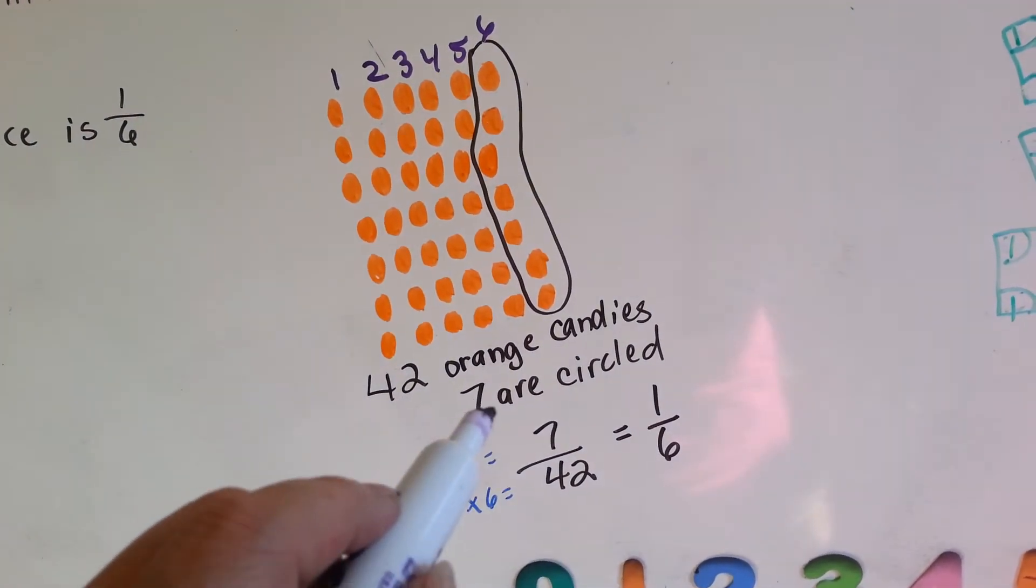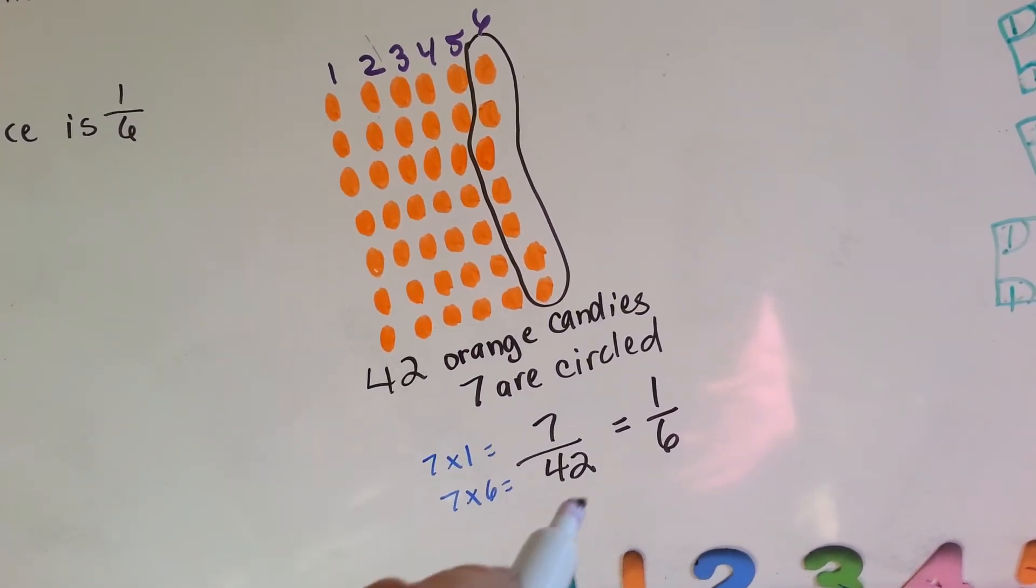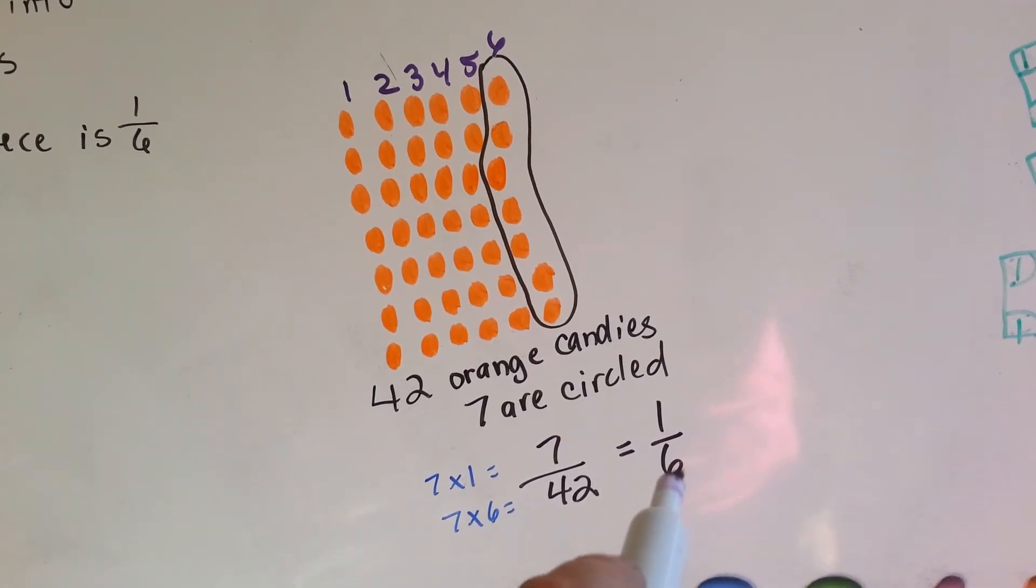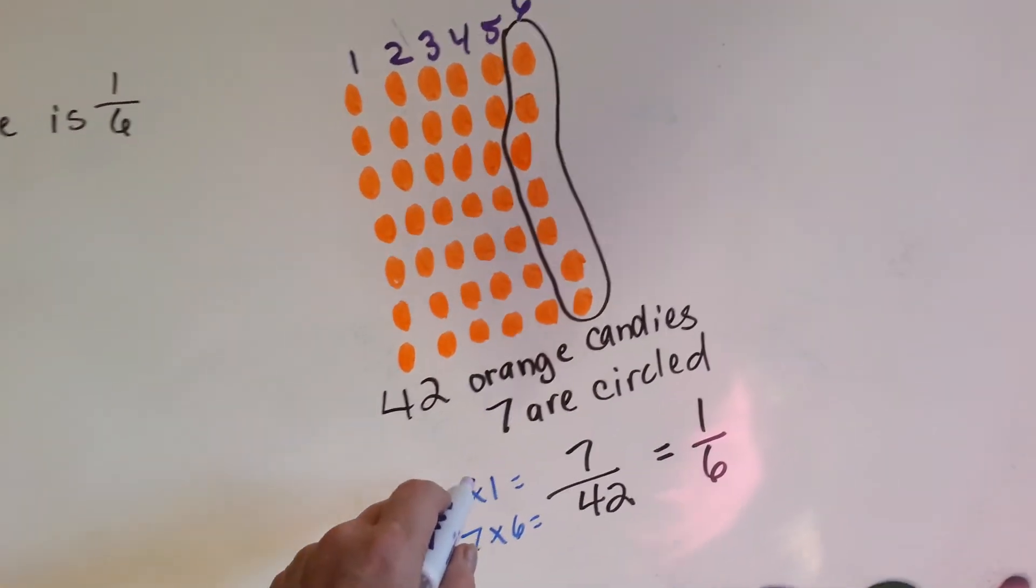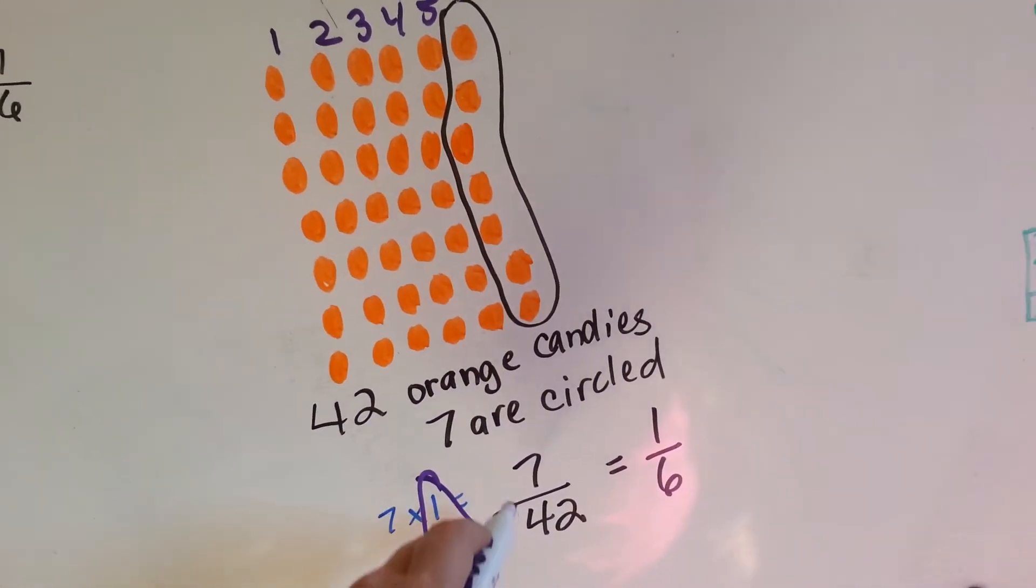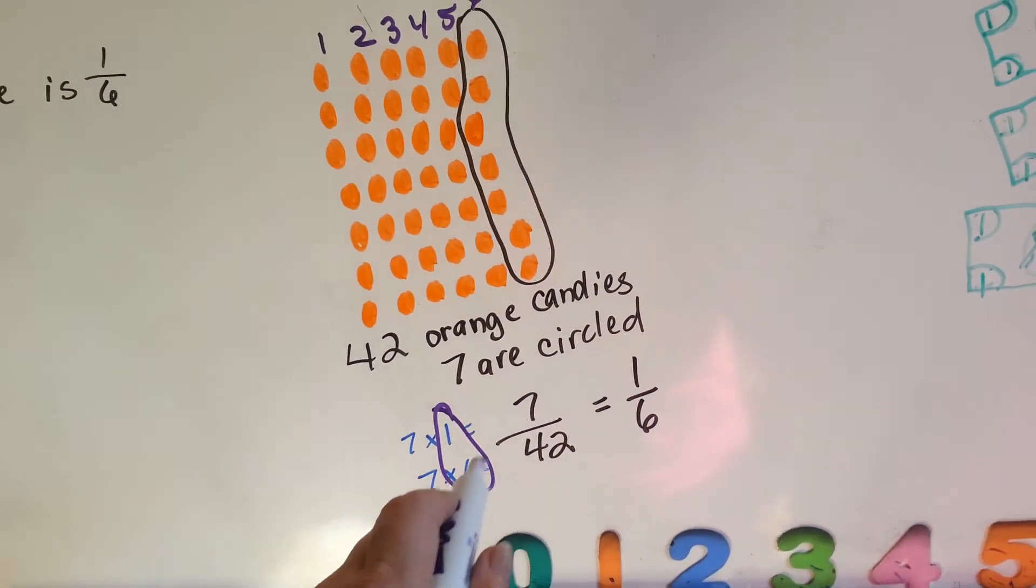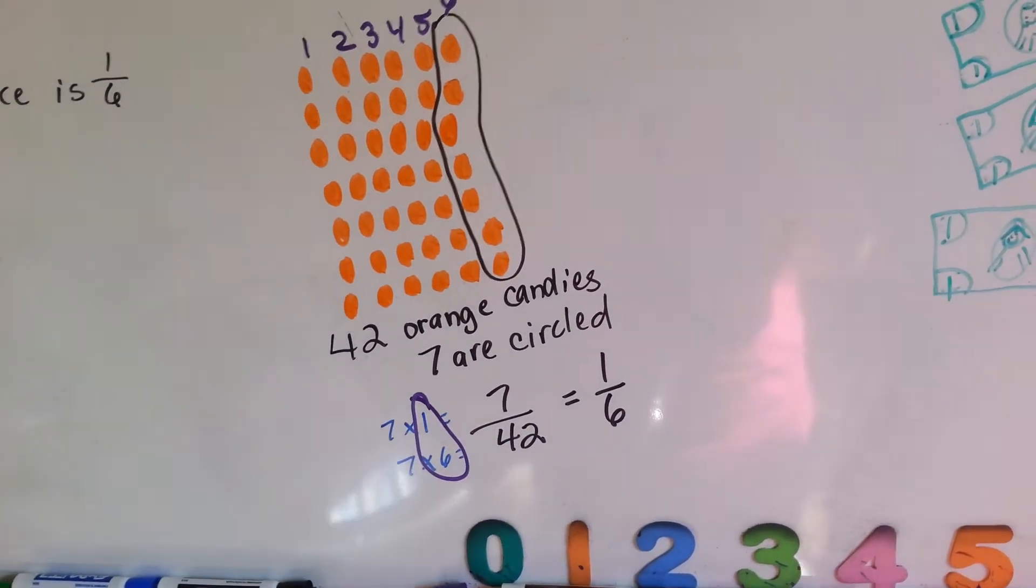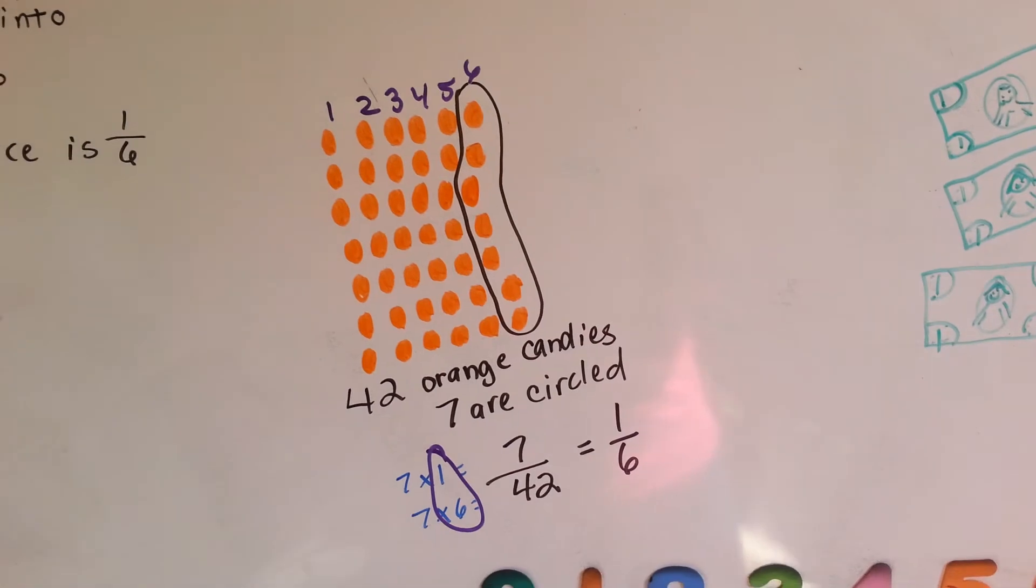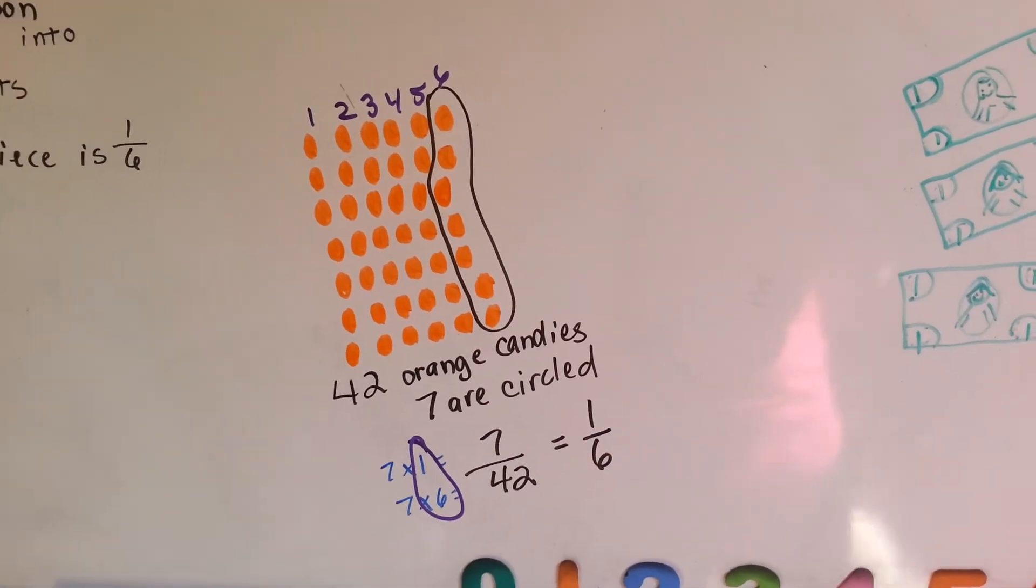Seven of the forty-two candies would be one-sixth of all the candies. Seven times one is seven. Seven times six is forty-two. There's our one-sixth. One-sixth is the same thing as seven forty-twos. You could say seven forty-seconds.